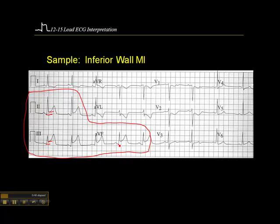And in AVF, we have the baseline here as well. The baseline is the TP line — from the previous T to the following P, that's your reference. And then the J-point is right here.